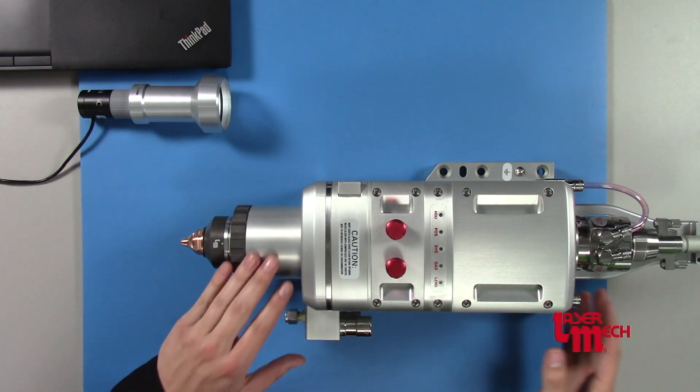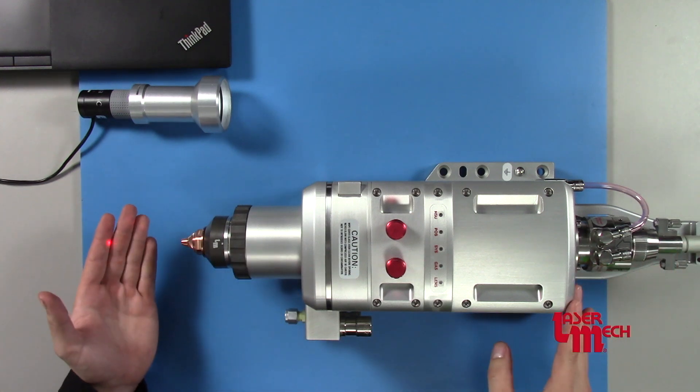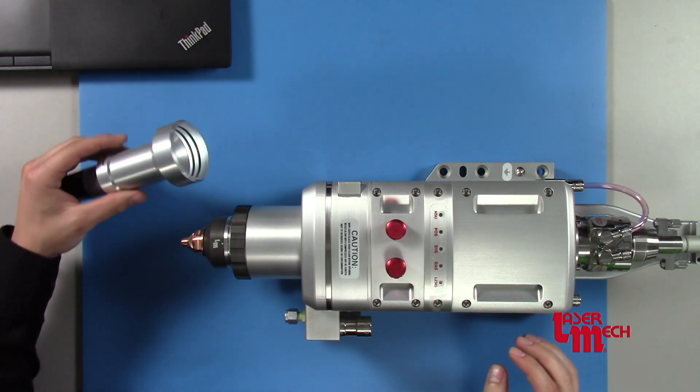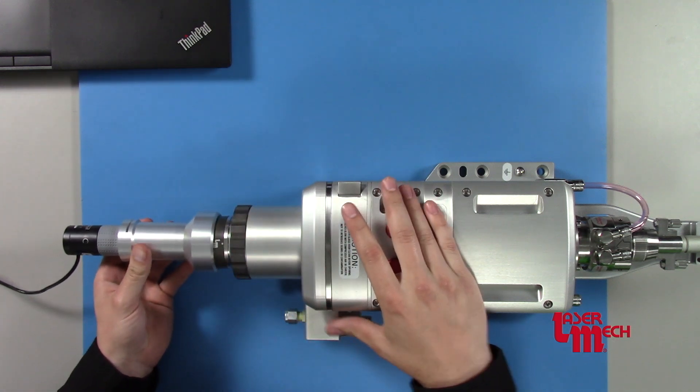Typically tip centering is done while your head is on the machine, so you'll have your fiber plugged into your head and the guide beam on, as you can see on my hand there. And then we'll grab our camera with our assembly on there, which is plugged into the computer.